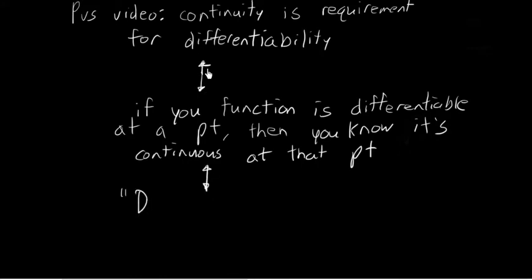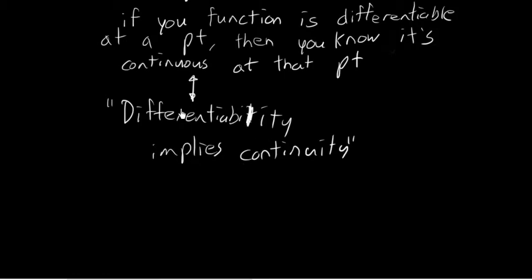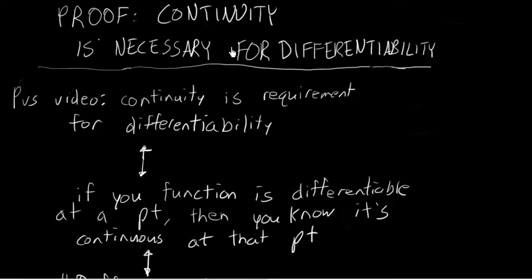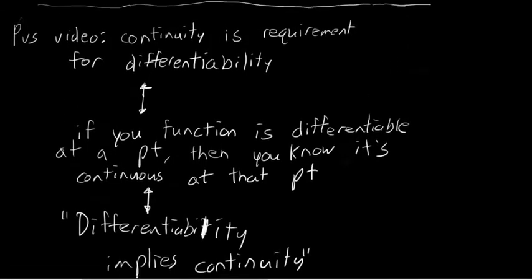These double arrows just mean it is logically equivalent — differentiability implies continuity. This is the statement you will see in your calculus textbooks, and this is exactly the statement we want to prove in this video. The title was 'a proof that continuity is necessary for differentiability,' which is logically equivalent to differentiability implies continuity. These statements are all logically equivalent to one another.